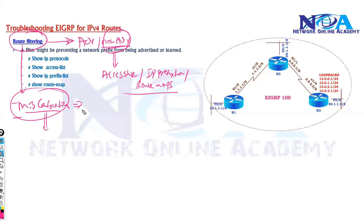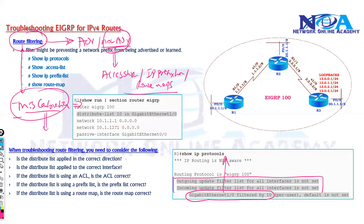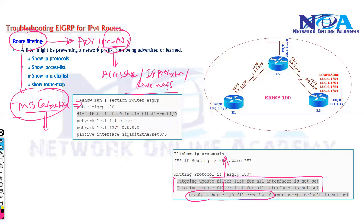There are specific show commands we'll be using for verification. We'll use show IP protocols, which can confirm if any route filtering is applied — you will see the filtering options applied on specific routers. We can also verify inside the configurations using show run section, where we can clearly see if there is a distribution list used.